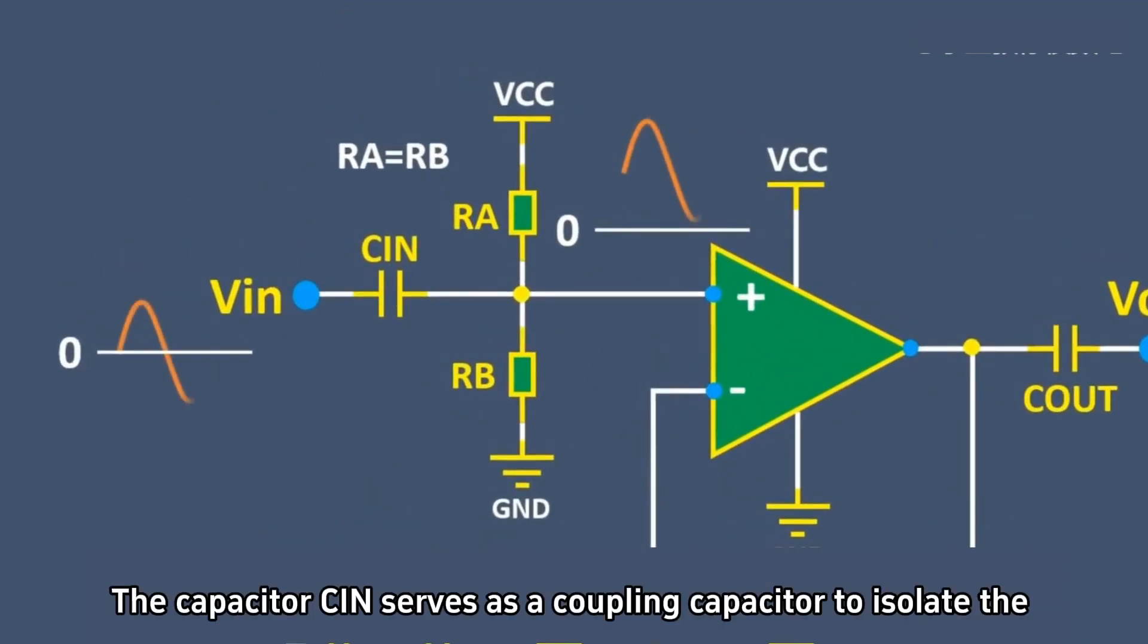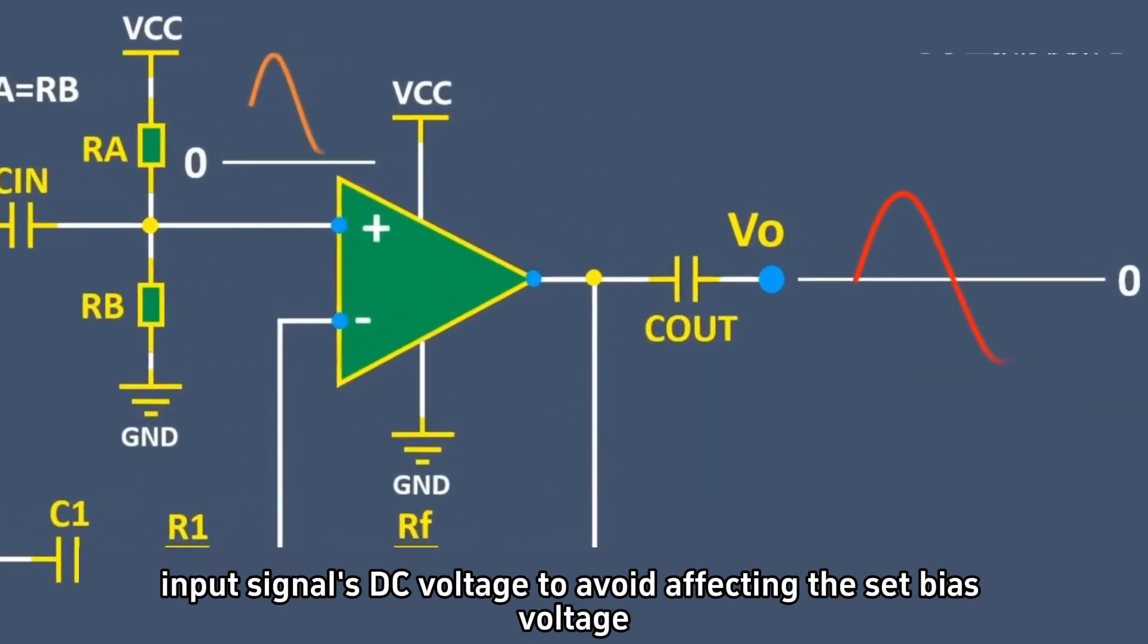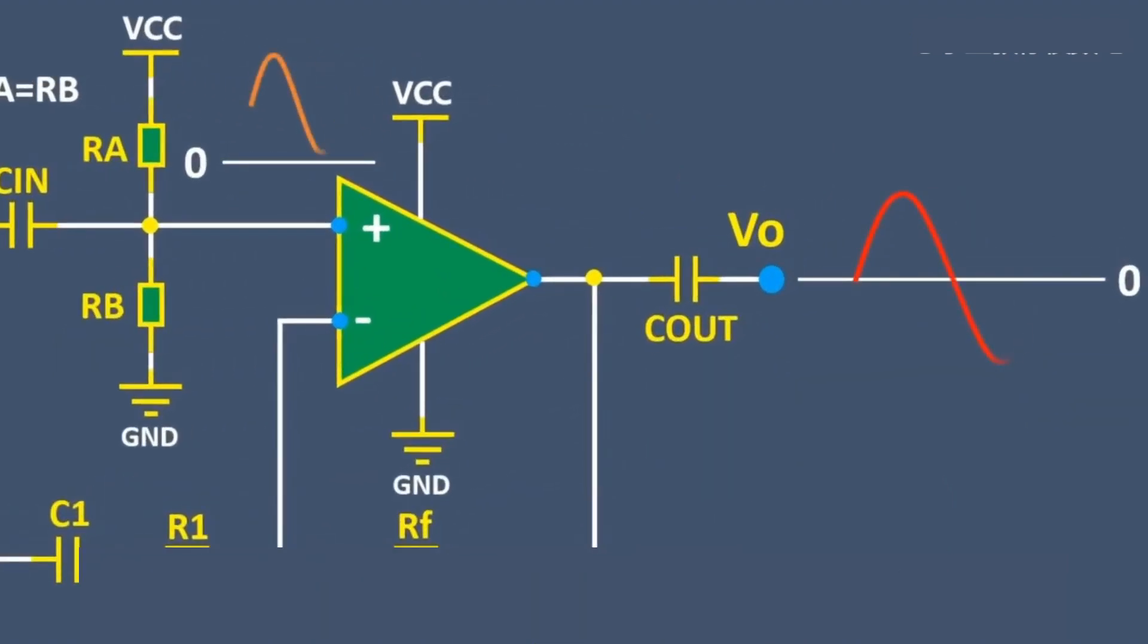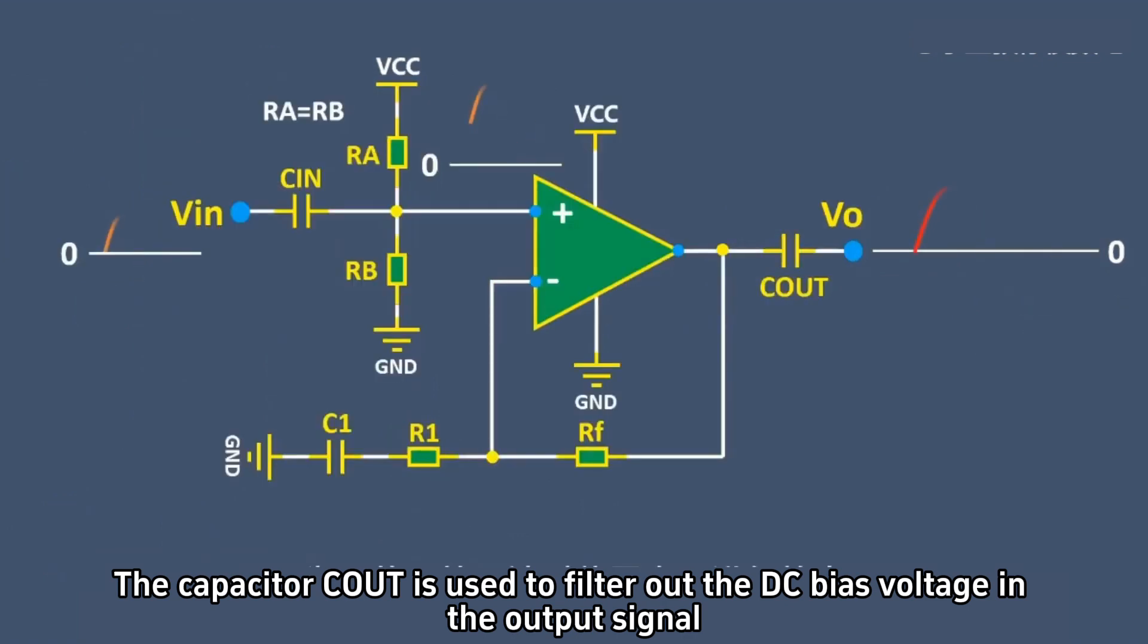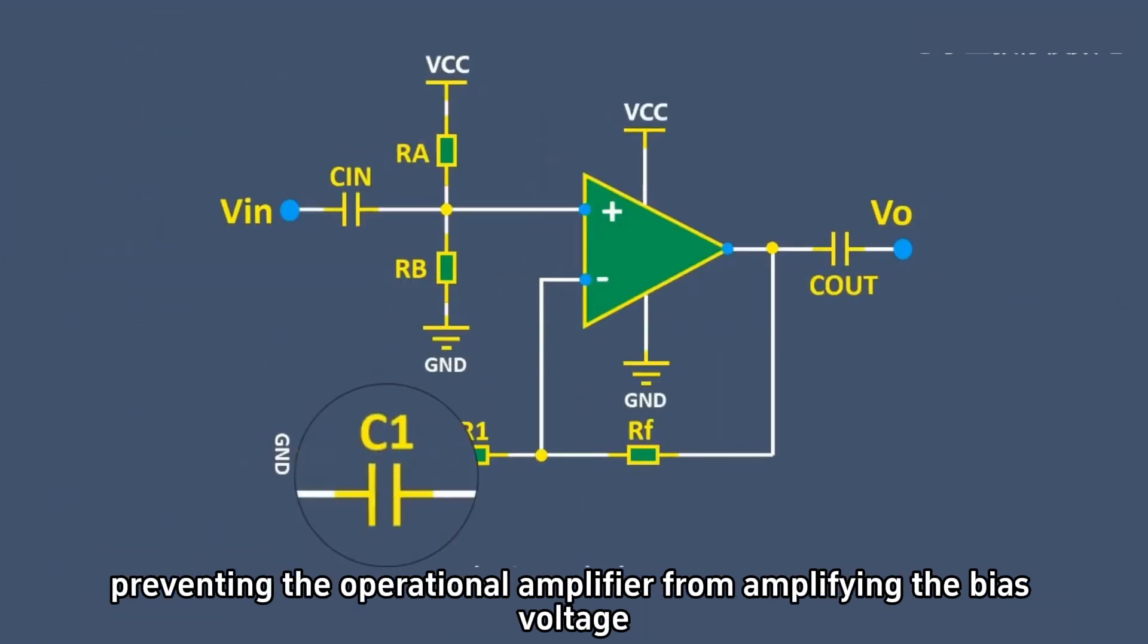The capacitor CIN serves as a coupling capacitor to isolate the input signal's DC voltage to avoid affecting the set bias voltage. The capacitor COUT is used to filter out the DC bias voltage in the output signal, preventing the operational amplifier from amplifying the bias voltage.